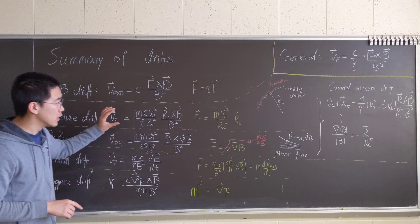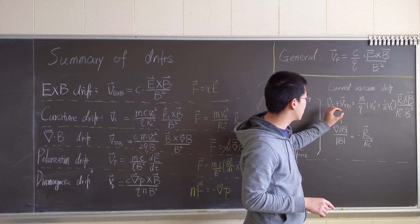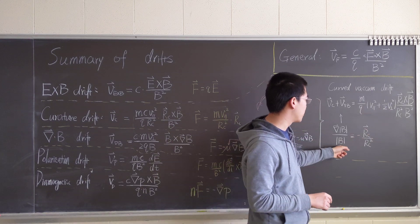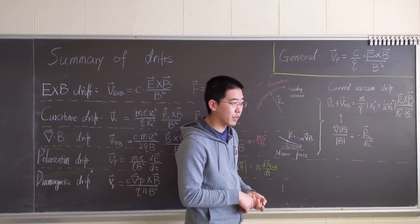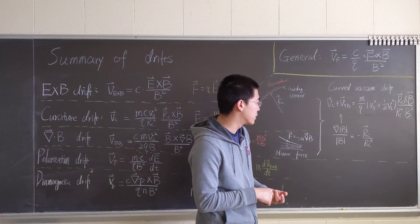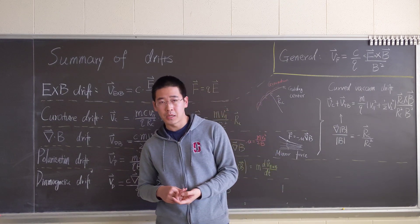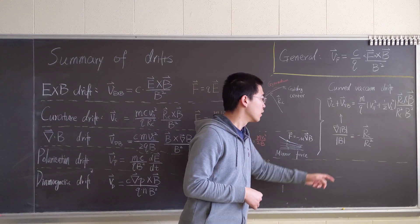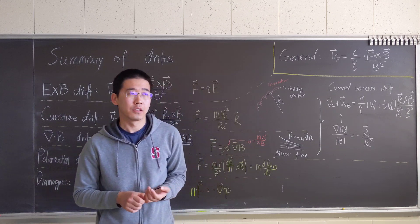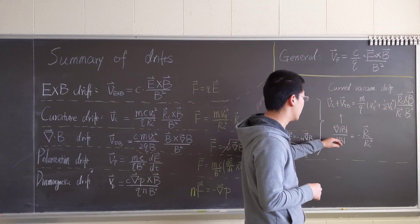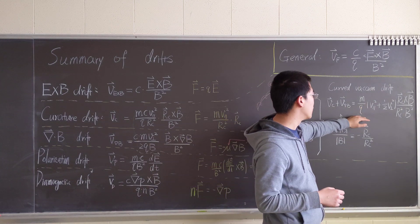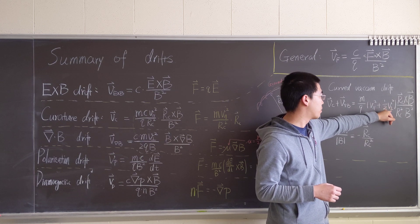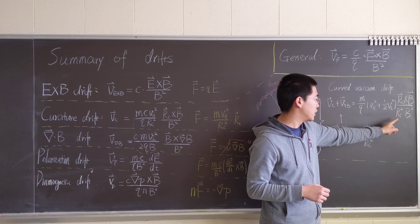For those two drifts, you can actually combine them into a more general form using the approximation that the variation of the magnetic field is on the order of the curvature — which is true for some cases, but you need to check. Adding those two together gives m over q times (v_parallel squared plus 1.5 v_perp squared), times R_c cross B over R_c squared B squared.